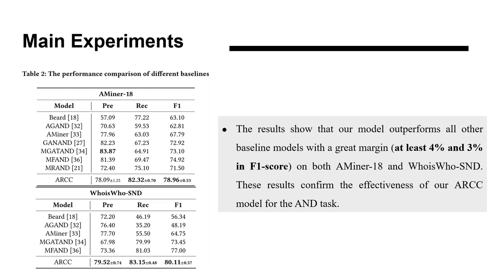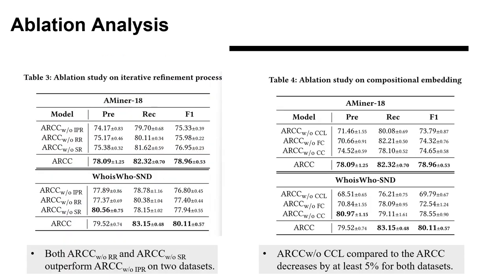The results show that our model outperforms other baselines by a greater margin of at least 4% and 3% in F1 score on two datasets. From the left table, it is observed that both without-R and without-SR outperform without-APR on two datasets. From the right table, without CCL compared to ARCC decreases by at least 5%. These results validate the effectiveness of our two modules.